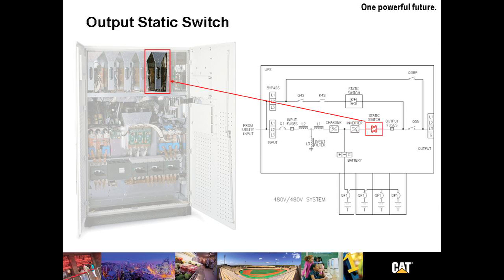One over from the inverter is the output static switch. The output static switch and the bypass static switch work together to assure the load is always powered. If there is ever a failure on the input, the static switch would provide a no-break transfer to the bypass, assuming of course the bypass is still within tolerance.